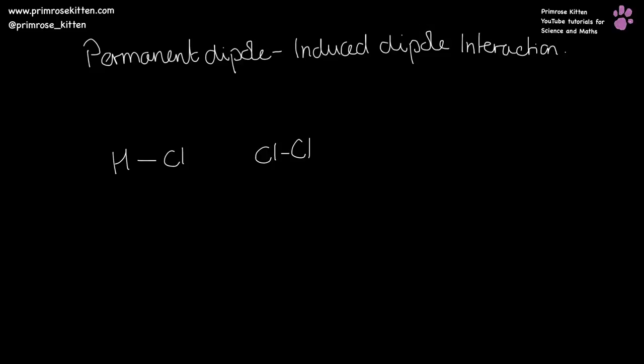In a permanent dipole-induced dipole interaction, we have something that has a permanent dipole, so it has a shifted electron cloud, and that is going to take the even electron cloud of the thing that doesn't have a dipole and shift it.